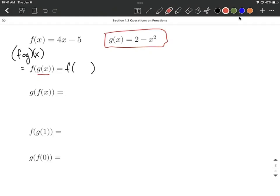So in g of x's spot, we can say that's supposed to be equal to 2 minus x squared and replace it in there where the g of x was.